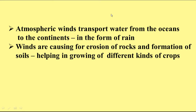The atmosphere causes condensation of water vapor again in the form of rain, transporting it to the continents — so we get rain through processes that happen in the atmosphere. Another example: the winds of the atmosphere cause erosion of rocks, which takes millions of years. Through erosion, rocks break into small dust particles, which lead to the formation of soils that help us grow different kinds of crops.